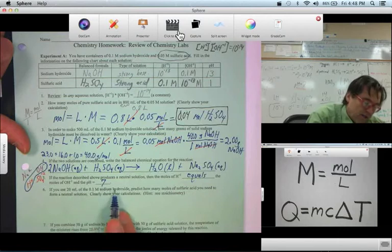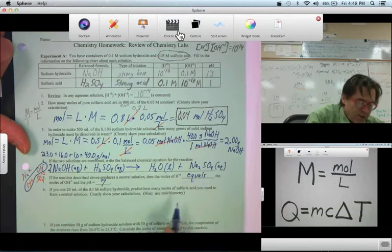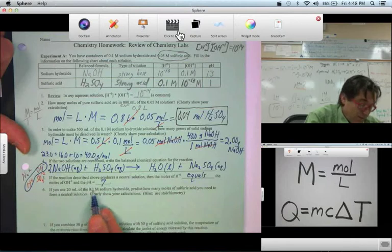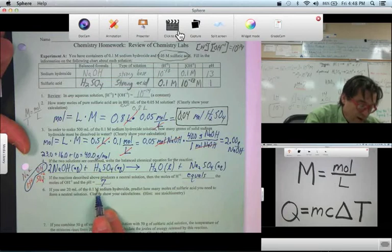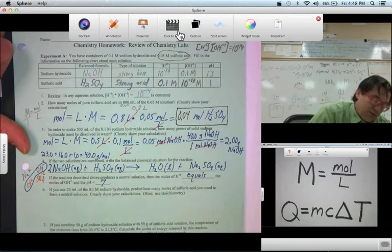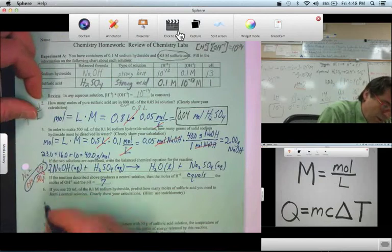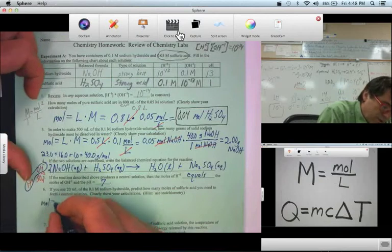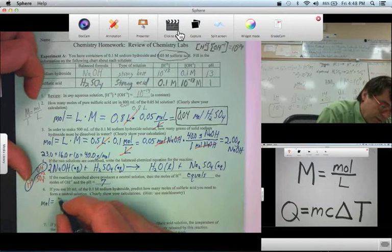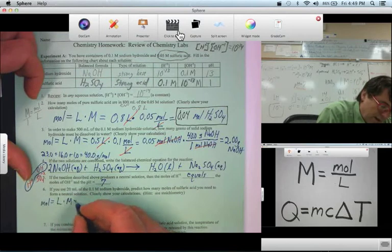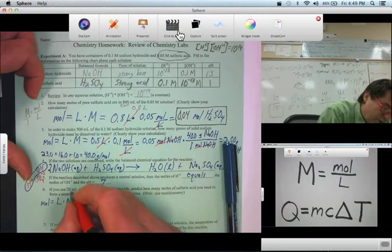If you use 20 milliliters of 0.1 molar sodium hydroxide, how many moles of sulfuric acid would you need for a neutral solution? Okay. Let's start by using stoichiometry. So we've determined the moles here. We've got the volume and the molarity.